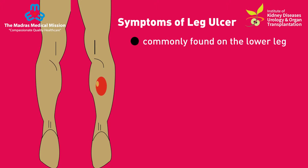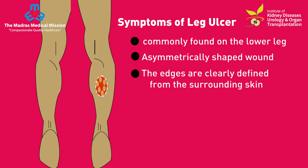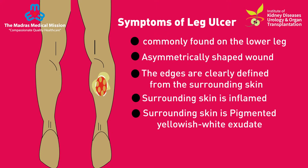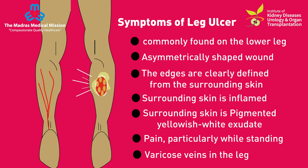Symptoms of a leg ulcer include: commonly found on the lower leg, asymmetrically shaped wound with clearly defined edges from the surrounding skin, surrounding skin is inflamed and pigmented, yellowish-white exudate, pain particularly while standing, and varicose veins in the leg.